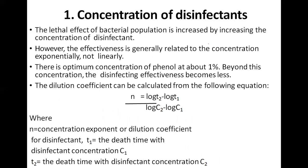The lethal effect on bacterial populations is increased by increasing the concentration of disinfectant. Effectiveness is generally related to concentration exponentially. There is an optimal concentration — for phenol it is about 1%; beyond this concentration, disinfectant effectiveness becomes less.